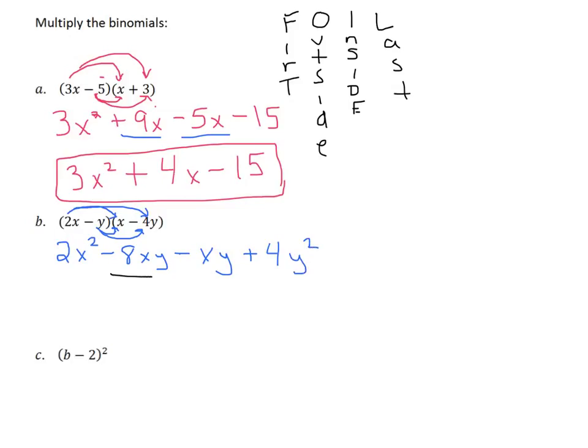Now let's combine our like terms. We've got a negative 8xy minus 1xy. So it's going to be 2x squared minus 9xy, because negative 8 minus 1 is negative 9, plus 4y squared. That's as far as we can go for that one.